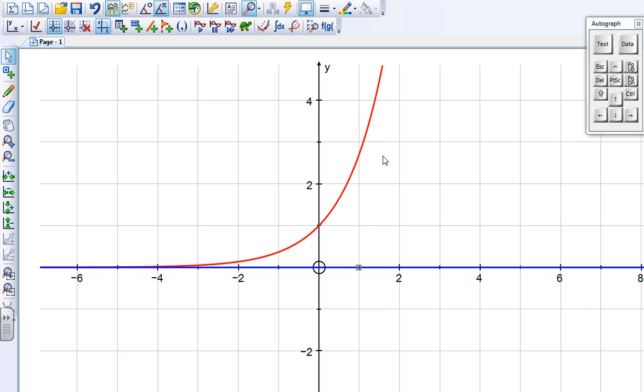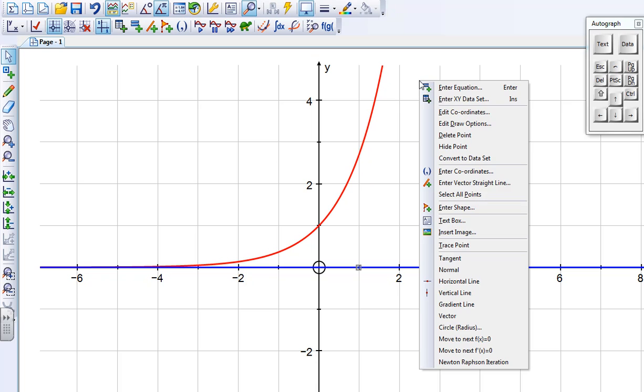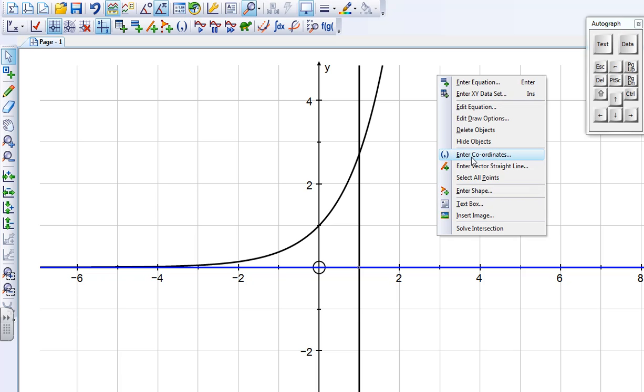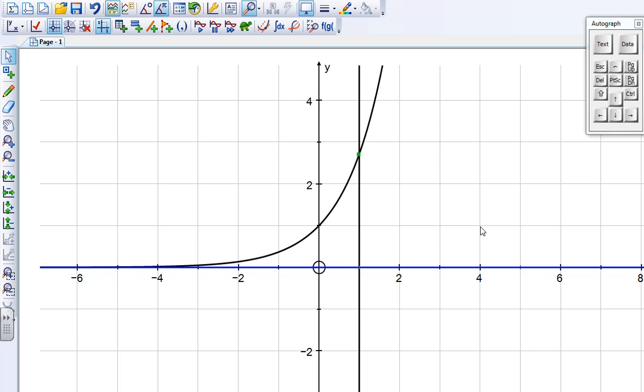Next thing I need is a vertical line going through this point, so select the point, right click, and then vertical line. I now need to find the intersection between the line and the curve, so if I select both of them, right click, and then I get the option of solve intersection.